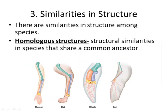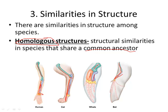Another evidence is similarities in structure. You can see the forelimbs of a human, a cat, a whale, and a bat — they have similar structures. The humerus in our arm is very similar to the cat, whale, and bat, and you can see the radius and ulna, wrist bones, and finger bones in each. All of these organisms have homologous structures — homo means same — showing they share a common ancestor. We are related to cats, whales, and bats, though we have a closer ancestor with a cat than a whale.